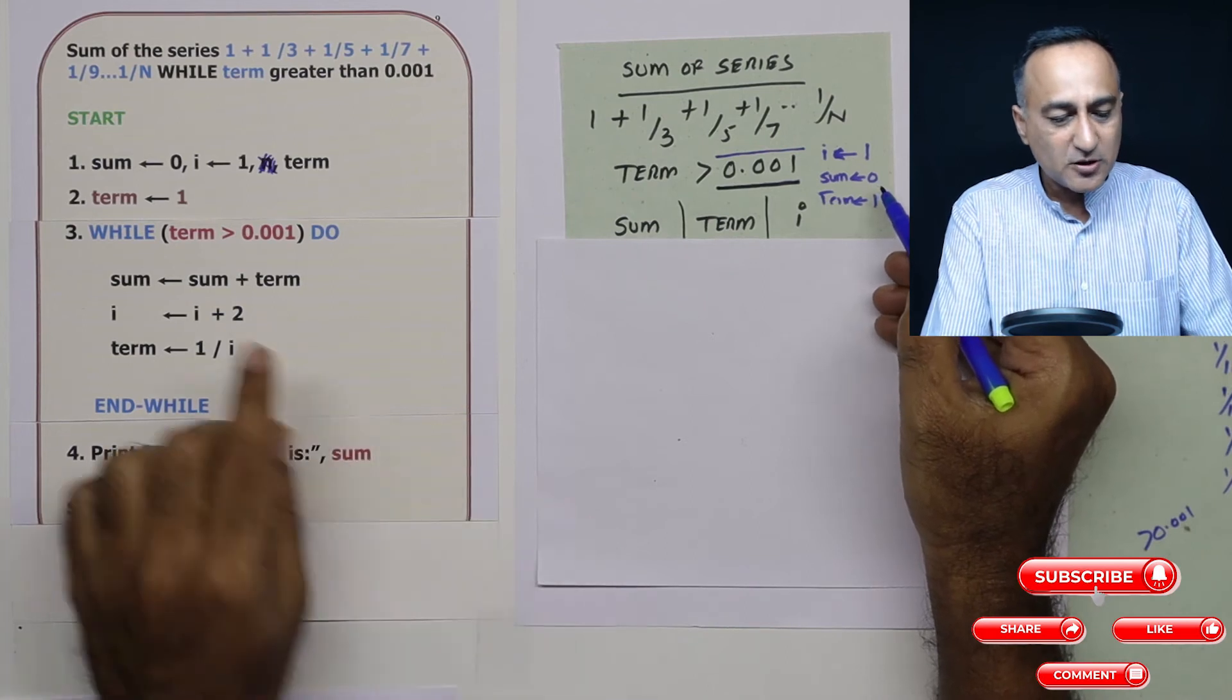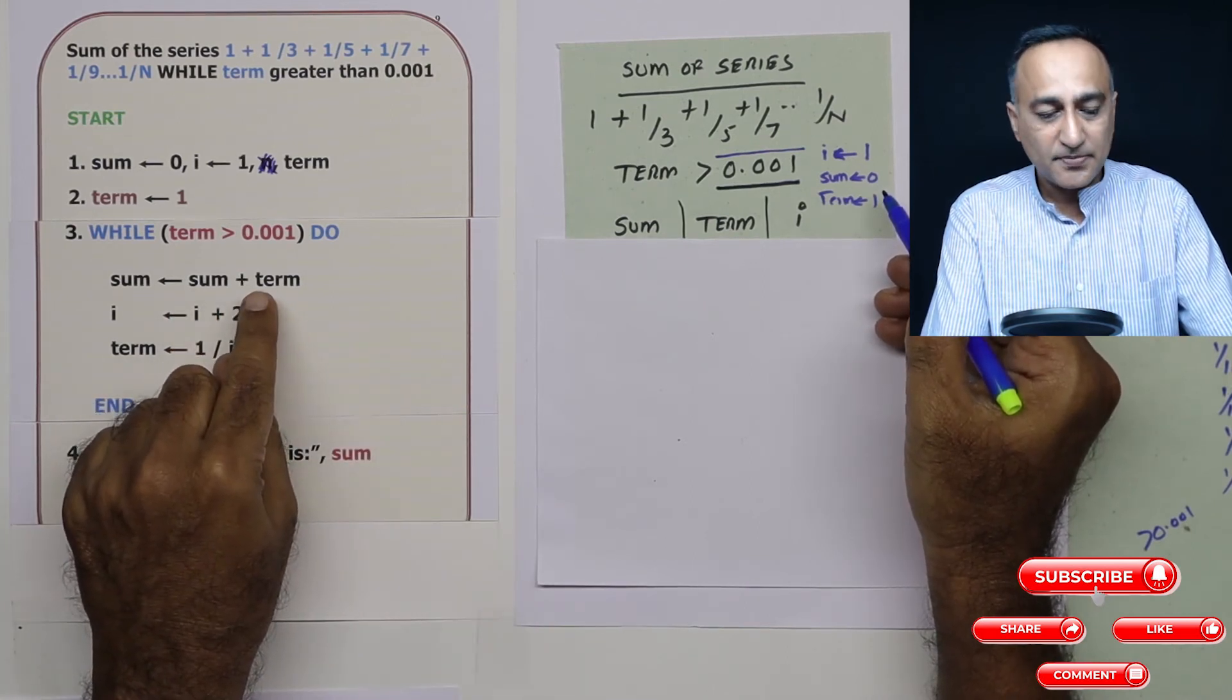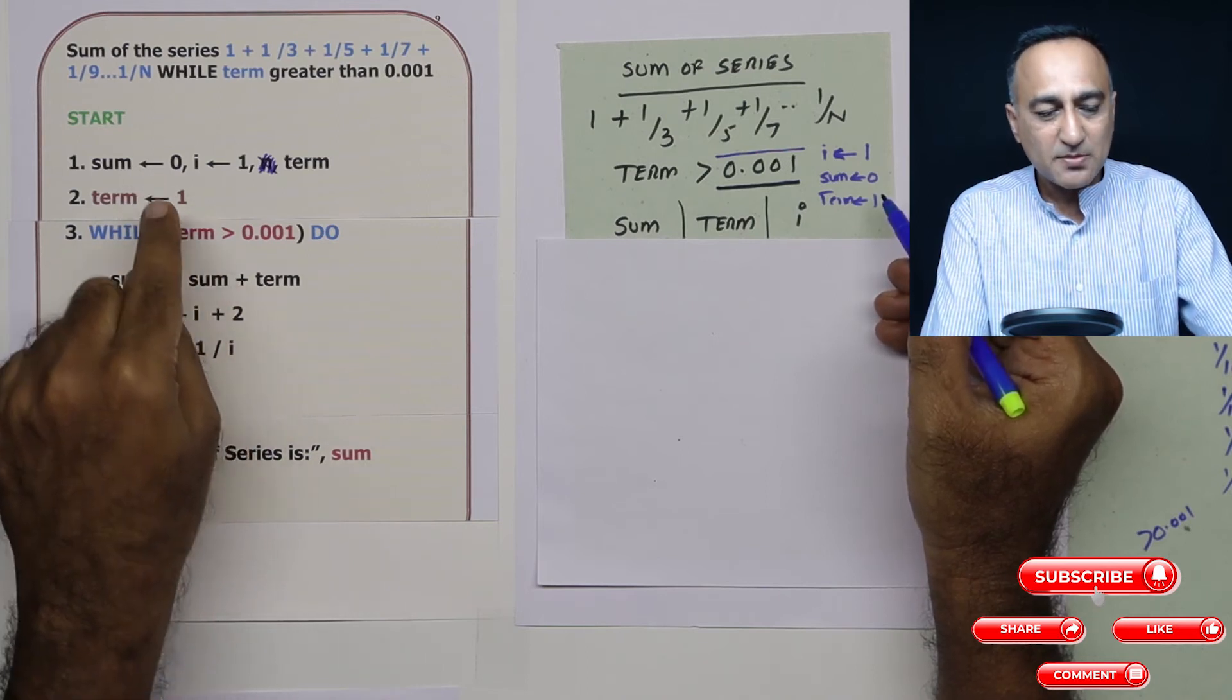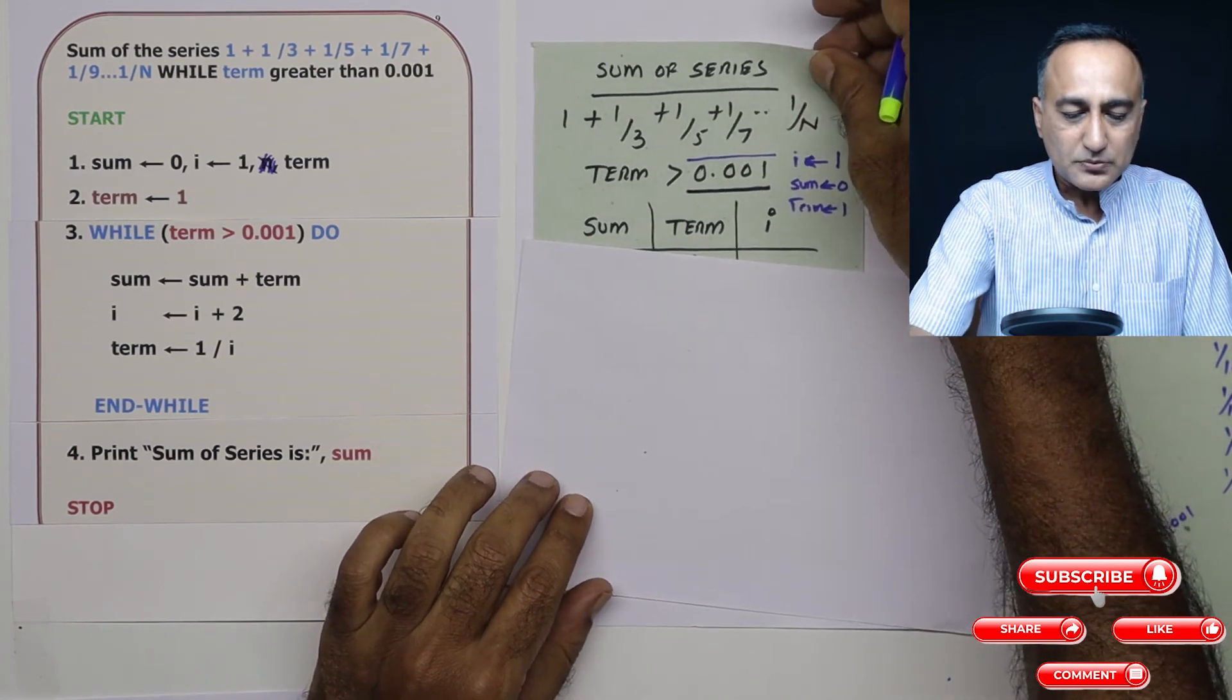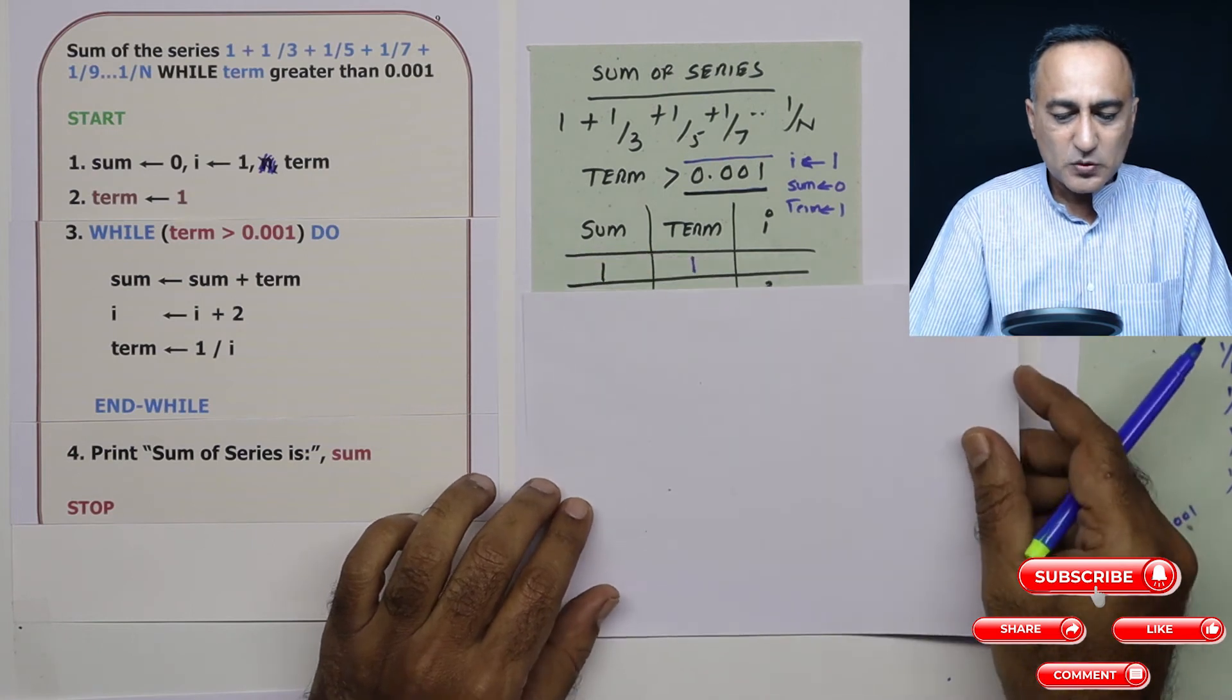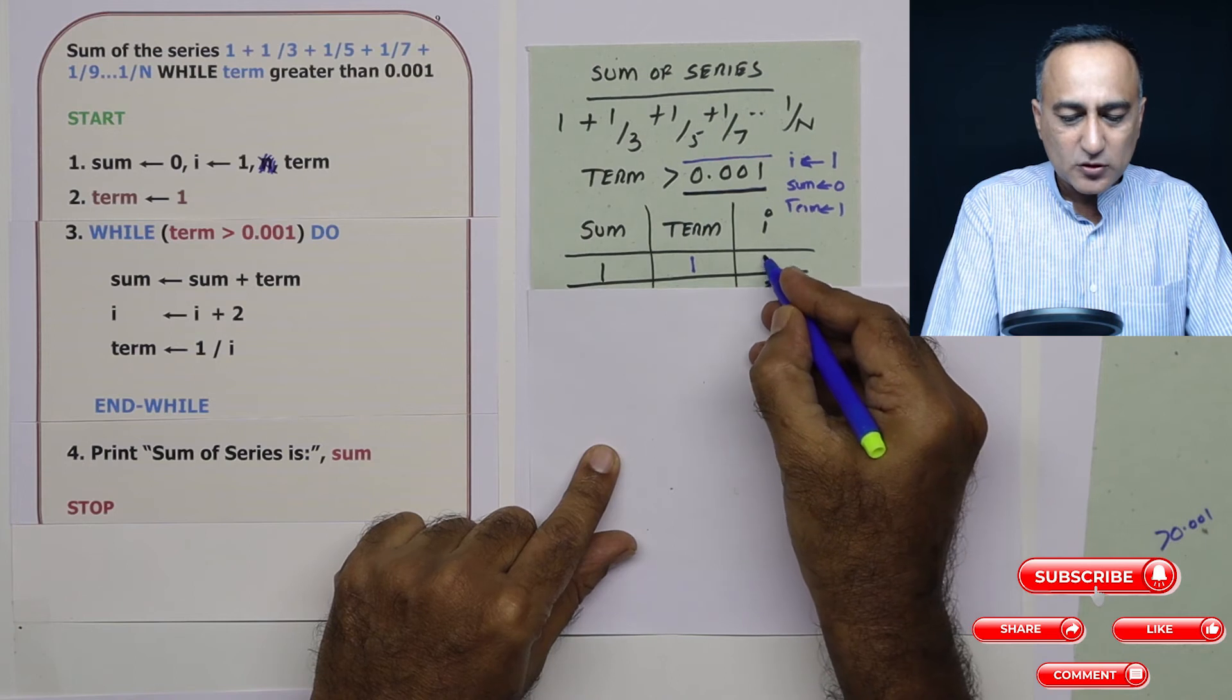It's important to make sum as 0 because I am taking the old value of sum and adding it to term. If you fail to make sum as 0, you are going to get garbage results because sum will take a garbage value. Now, let's go to the next step. So sum is 0, term is 1, i is also 1. At this point, i is also 1.